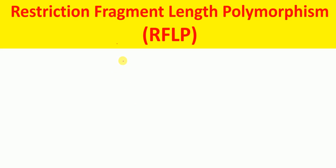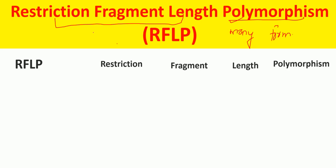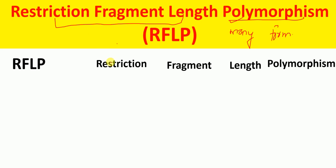In this lecture I'm going to talk about restriction fragment length polymorphism, RFLP. 'Restriction fragment length' refers to the length of restriction fragments, and 'polymorphism' means many forms — 'poly' means many and 'morph' means form. So in simple words, RFLP refers to the many forms of restriction fragment lengths.